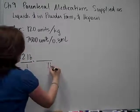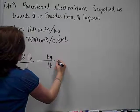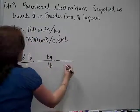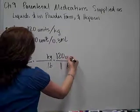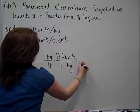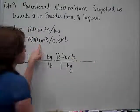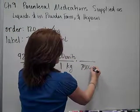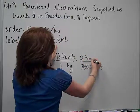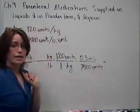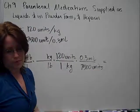And, you'll need to convert pounds to kilograms. Once I do that, I can pull in my doctor's order. And, I'll put 1 kilogram on the bottom, 120 units on top, and then 7,500 units on the bottom over here, and 3 tenths of a milliliters on top. And, that will give you an answer in milliliters.